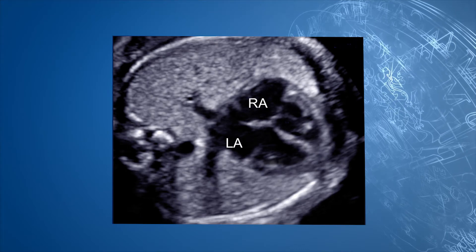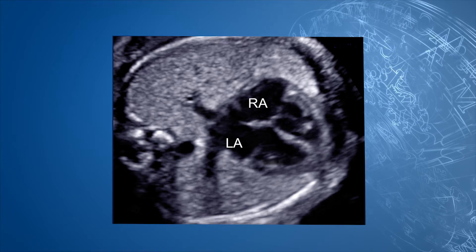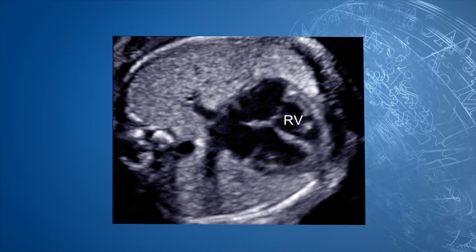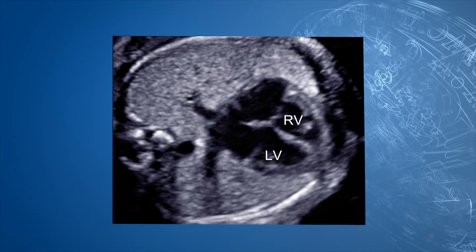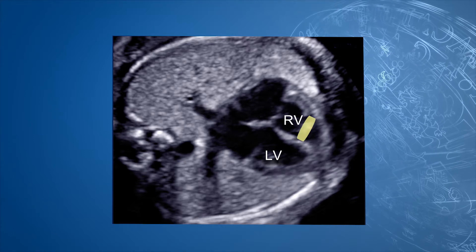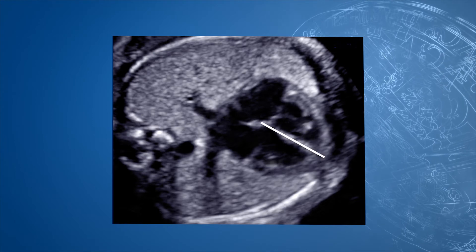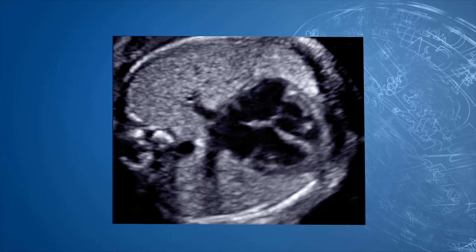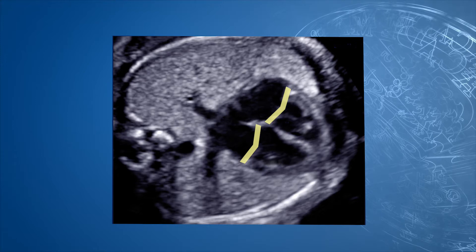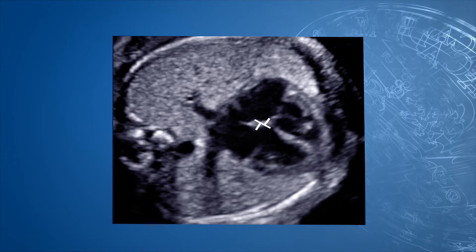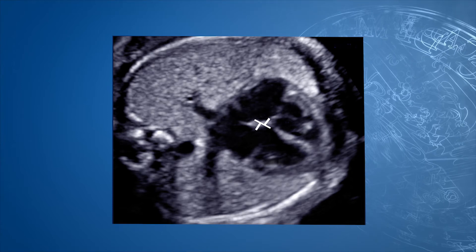The atria are equally sized and the atrial septum with the foramen ovale is positioned in between. The right ventricle is positioned against the sternum and is equally sized compared to the left ventricle. The moderator band identifies this ventricle as the right ventricle. Examine if the ventricular septum is intact. The tricuspid valve and the mitral valve are separated by the crux.